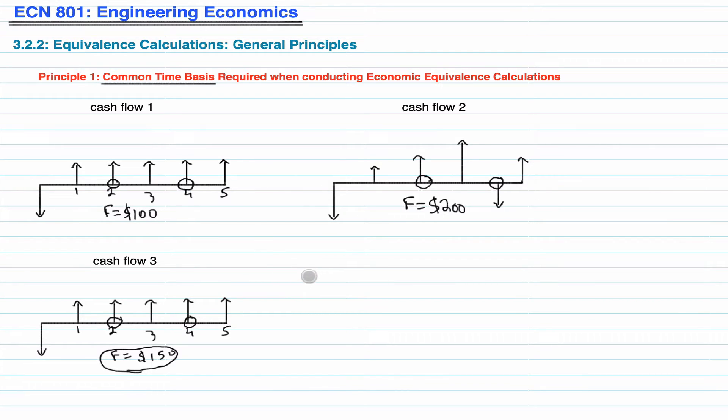And then you'd pick the highest value, because you always want the most money. So you would have to compare the periods. It's not fair for you to compare the 3rd period of this cash flow versus the 1st period of this cash flow and the 5th period of the 3rd cash flow. So that's pretty much what the 1st principle is about, and we'll do examples to understand this much clearly.